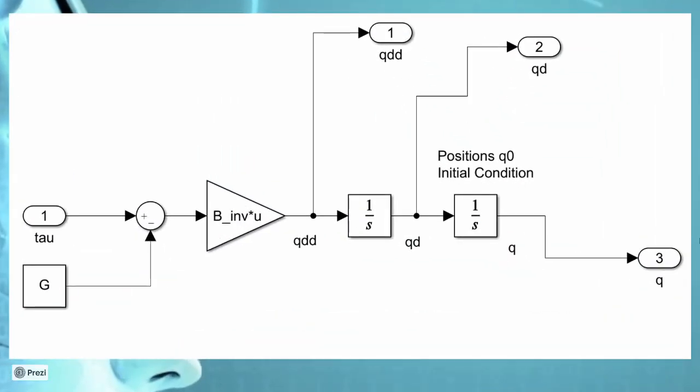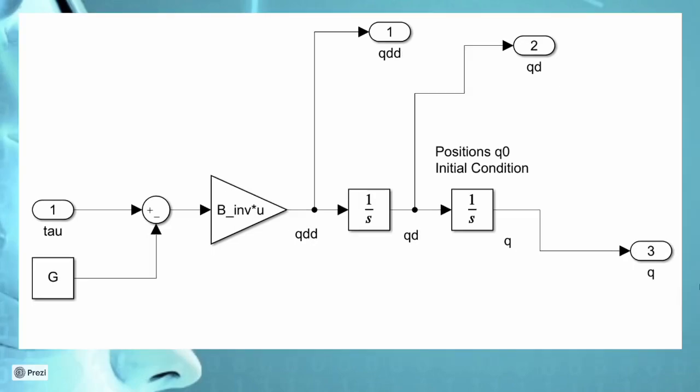Inside the manipulator, we can notice that the gravitational disturbance G is not feedback from the position, since it does not depend on the configuration. Then, we implemented the inverse of B matrix inside a gain block, since it is constant. It is followed by two integral blocks, because we need to acquire the velocity and the position from the acceleration. Inside these two blocks, we put the position and the velocity initial condition.